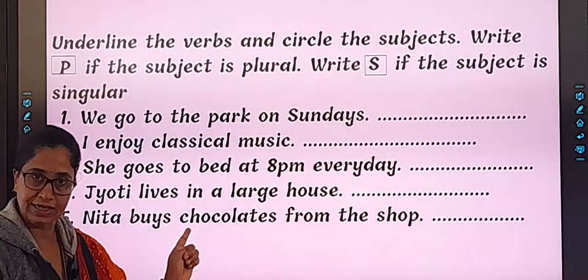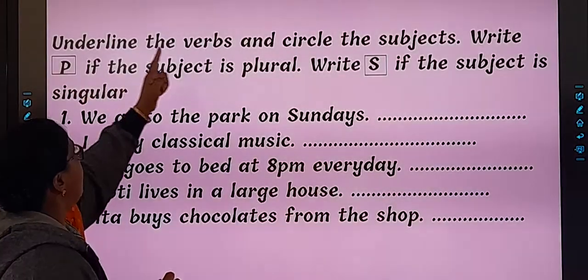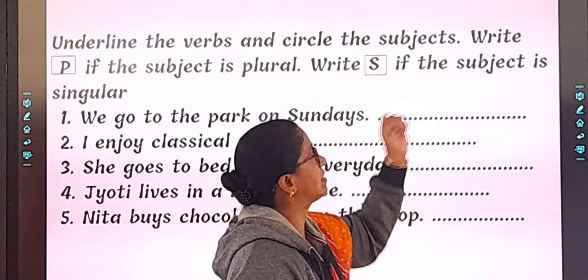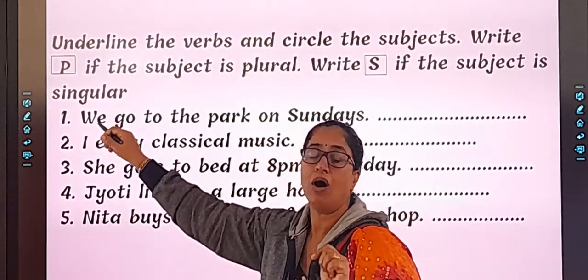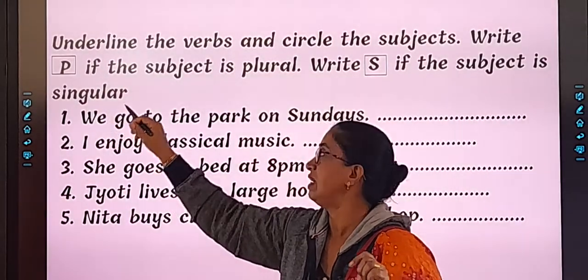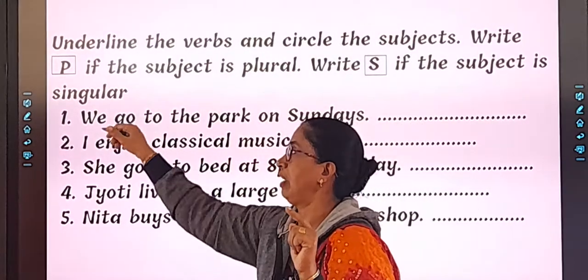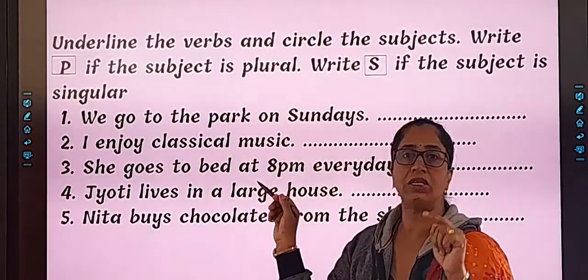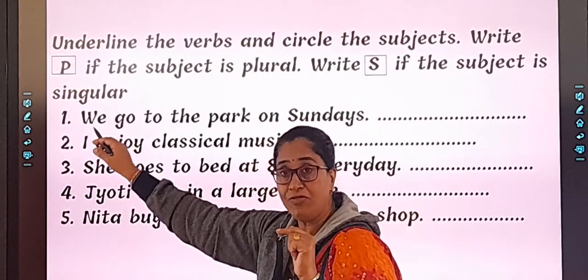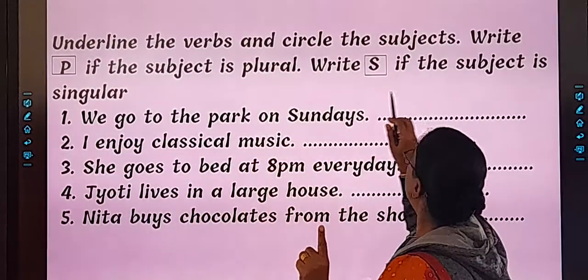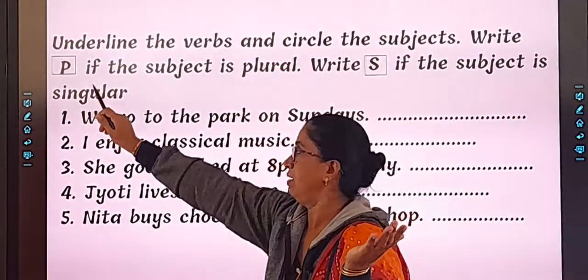So this is your textual exercise. Take the pencil, open the textbook and let's do it. Underline the verb and circle the subjects. Write P if the subject is plural. Subject means about whom we are talking about. Who are we talking about in this sentence? That is the subject. Now you have to see if the subject is single, you will put S. And if the subject is plural, you will put P. So ready, students?